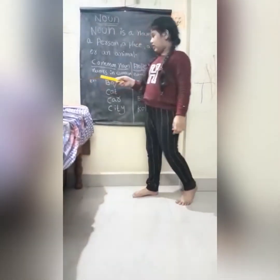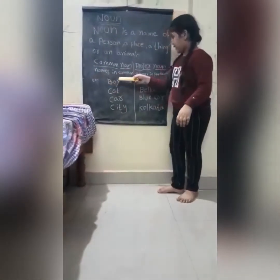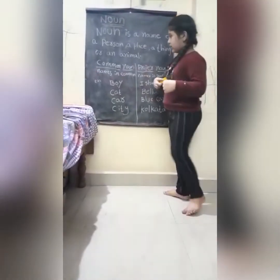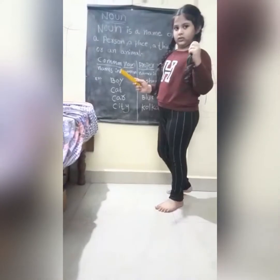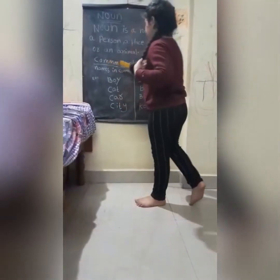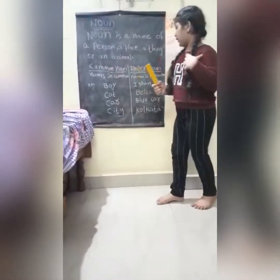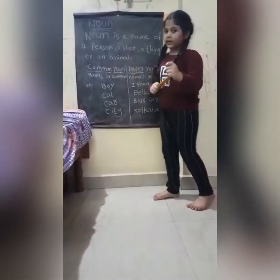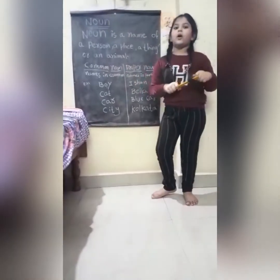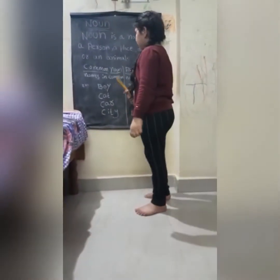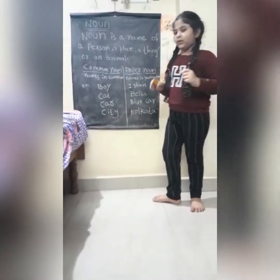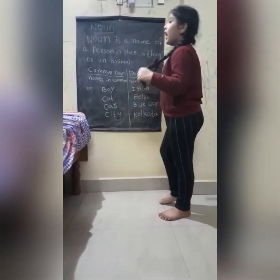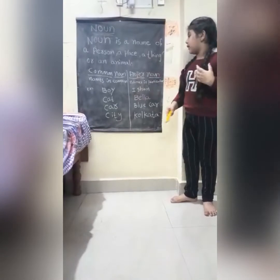Example: Core — under common noun. Dishan — under proper noun. Cat — under common noun. Bella — under proper noun.